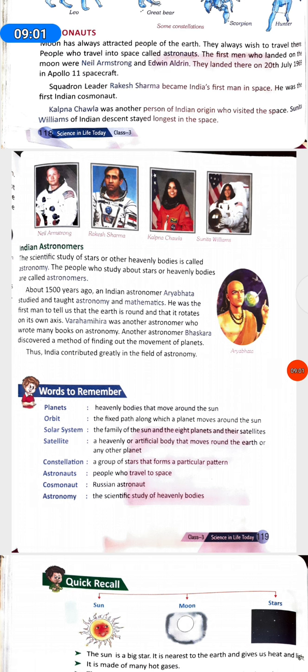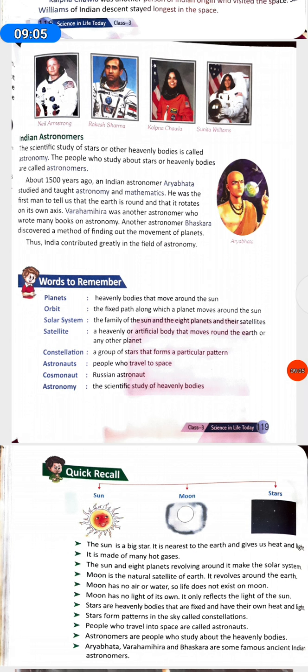Words to Remember. Planets: Heavenly bodies that move around the sun. Orbit: The fixed path along which a planet moves around the sun. Solar System: The family of the sun and eight planets and their satellites. Satellite: A heavenly or artificial body that moves around the Earth or any other planet. Constellation: A group of stars that forms a particular pattern. Astronauts: People who travel to space. Cosmonauts: Russian Astronauts. Astronomy: The scientific study of heavenly bodies.